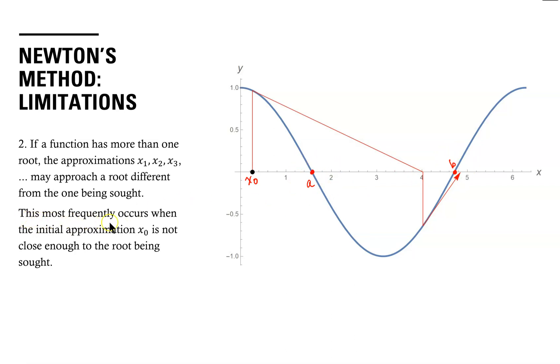Now this most frequently occurs when our initial approximation is not close enough to a. So in this case, choosing x0 to be, say, 1 might produce better results. Might not. 1 might not even be close enough. Maybe 1.25 might have to be close enough. But be aware that this can happen if your initial approximation is not close enough to the root that you are searching for.